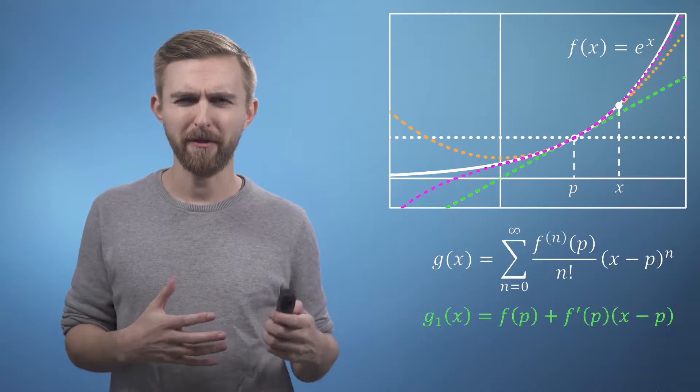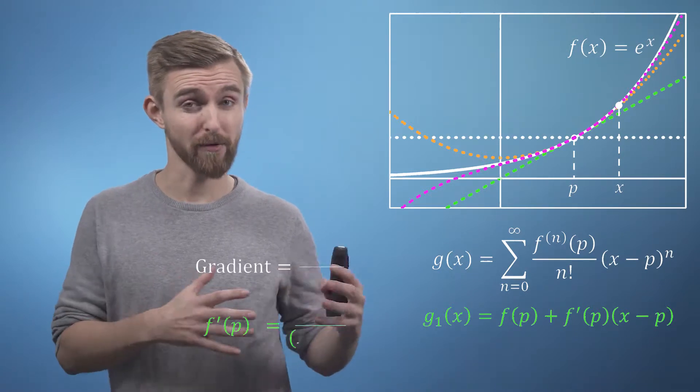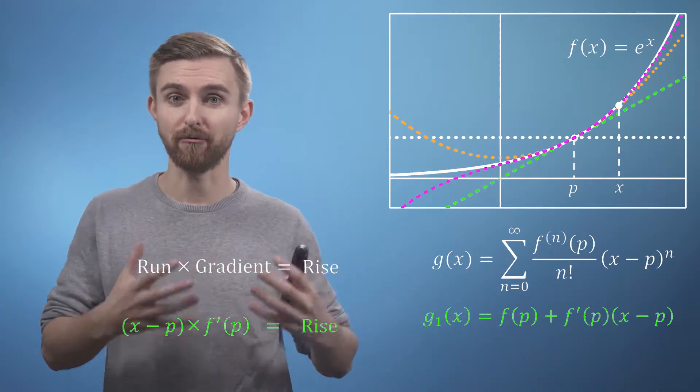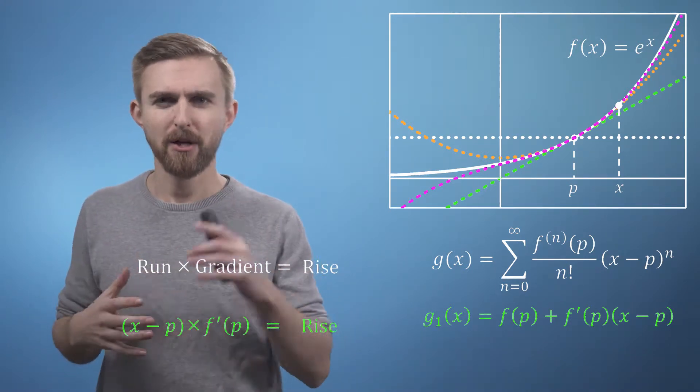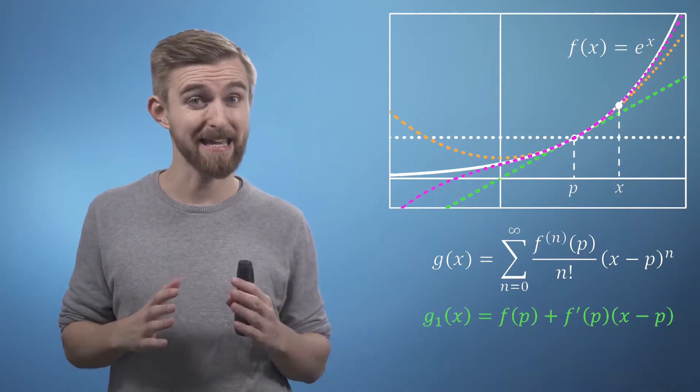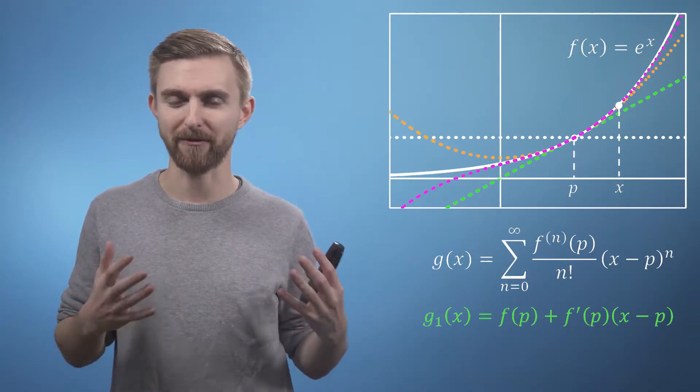In a sense, rather than using gradient equals rise over run, we are just rearranging to rise equals gradient times run. You are ultimately going to use your approximation to evaluate the function near p, as you must already know about it at p.